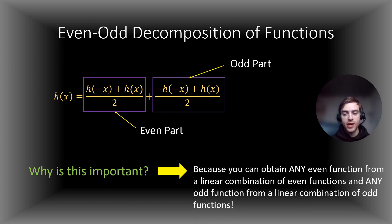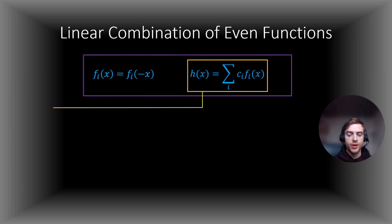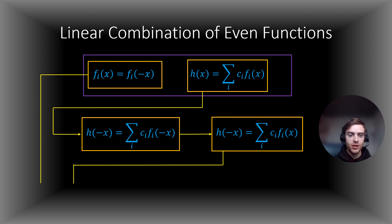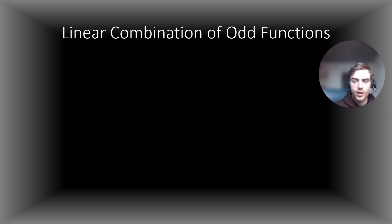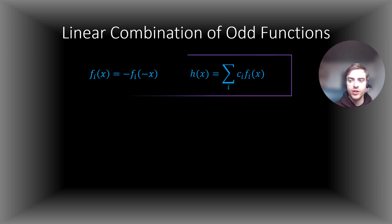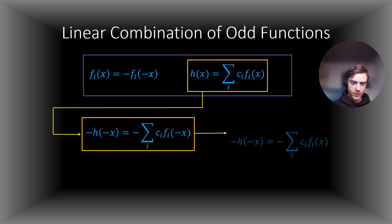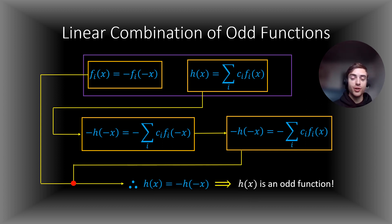It's important because you can obtain any even function from a linear combination of even functions, and any odd function from a linear combination of odd functions. Note that we say a linear combination — that's going to be important. We will prove that a linear combination of a set of even functions must also be an even function: if we have a set of even functions f_i of x, then the linear combination h of x must be an even function. And we will prove that the linear combination of a set of odd functions must also be an odd function: if you have a set of odd functions f_i of x, then the linear combination h of x must also be an odd function.